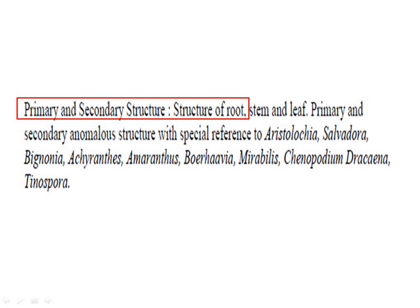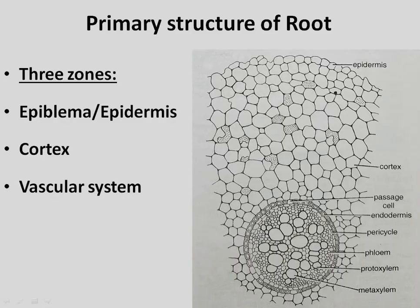Before that, we had a general knowledge about Root, and after that we had a few initial questions about Root's primary structure. Now we are going to learn further questions about Root's primary structure. We have seen in the previous video that the root is divided into 3 zones.